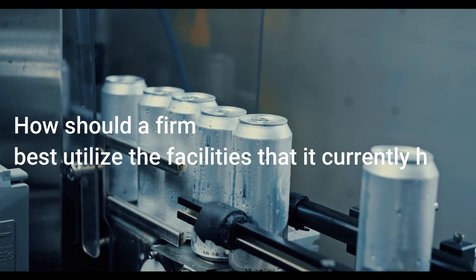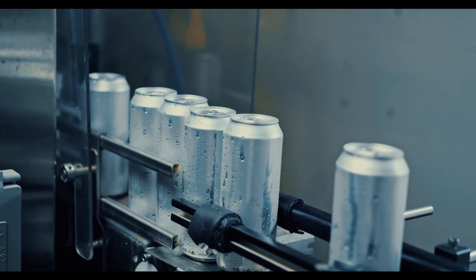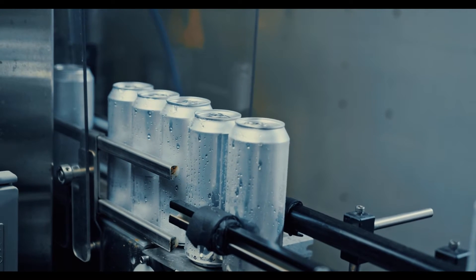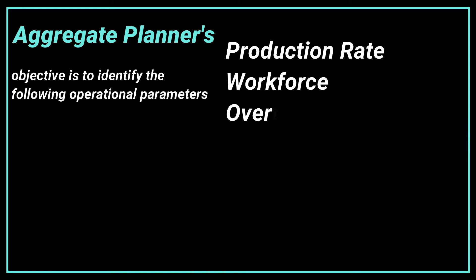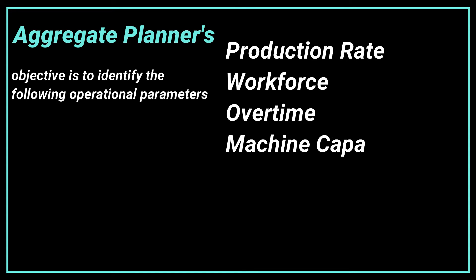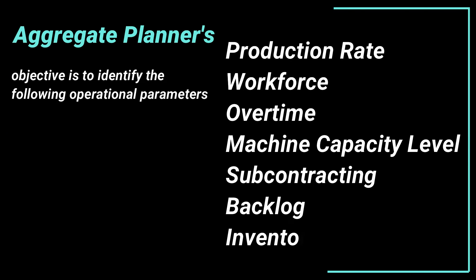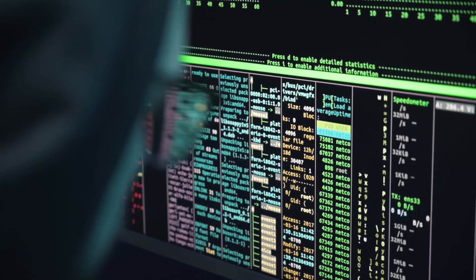Therefore, aggregate planning answers the question: how should a firm best utilize the facility that it currently has? The aggregate planner's main objective is to identify the following operational parameters over a specific time horizon: production rate, workforce overtime, machine capacity level, subcontracting, backlog, and inventory on hand.